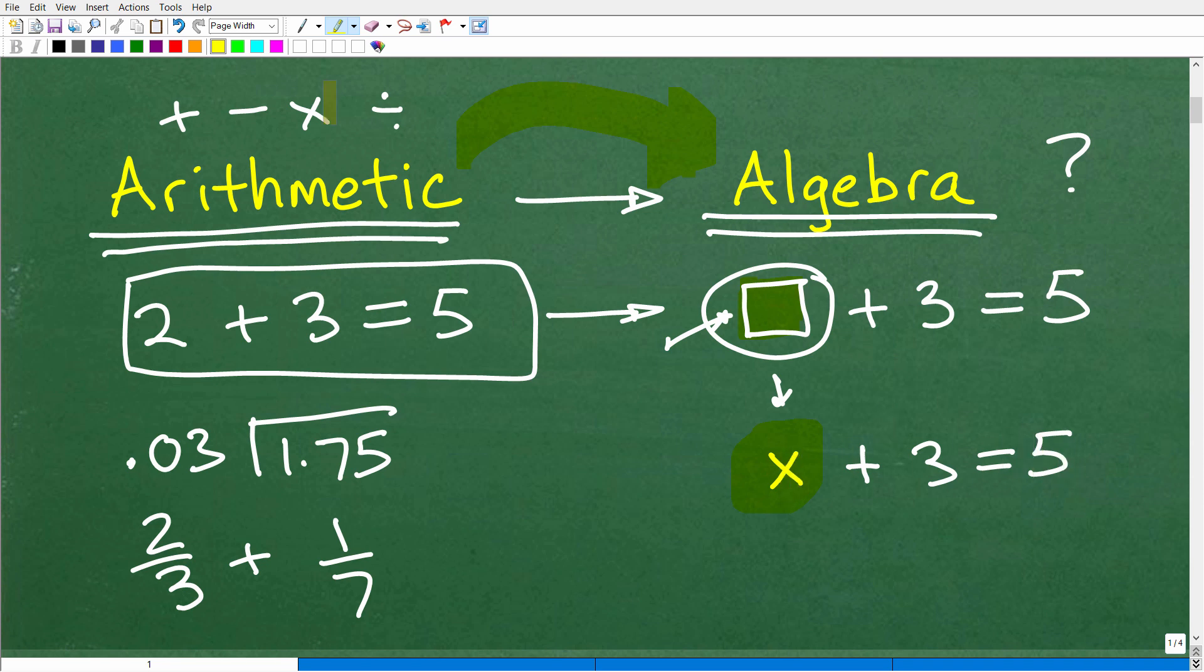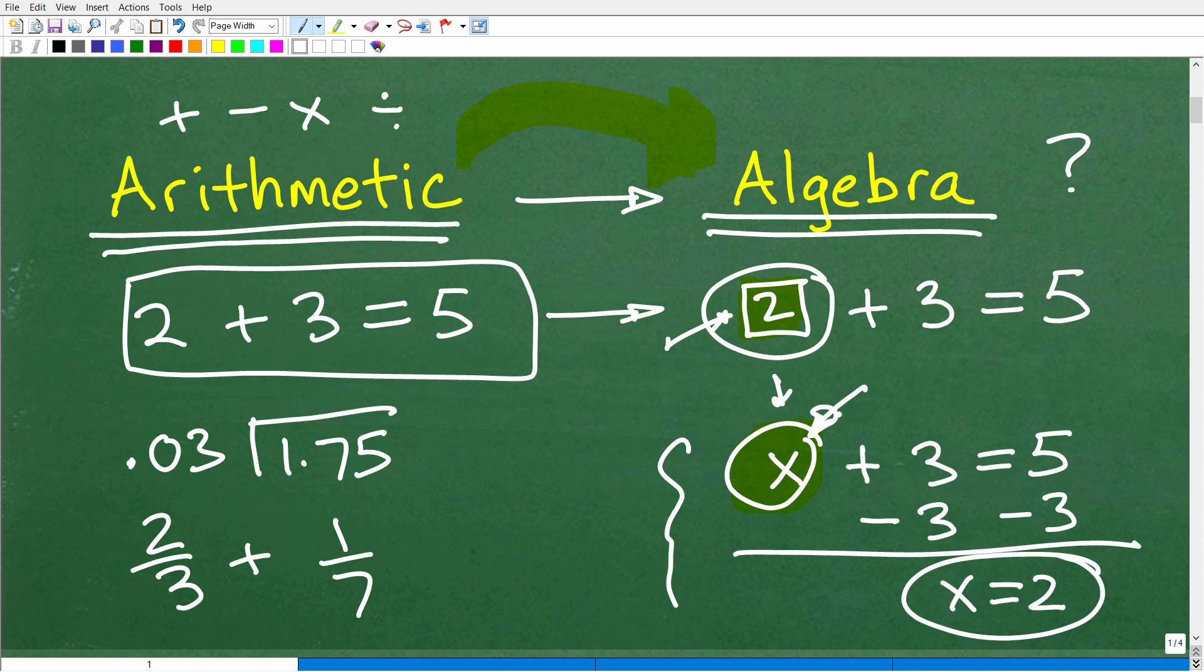Well, in algebra, we would write this question in terms of something called an equation. And instead of this symbol, we'll use a symbol like this. So we have X plus three is equal to five. And now we have an equation, but the problem is still the same. We're trying to figure out what value, what number does this symbol represent. What is the correct value for this variable to make this statement true? So here we have an equation, and then we learn how to solve equations in algebra.